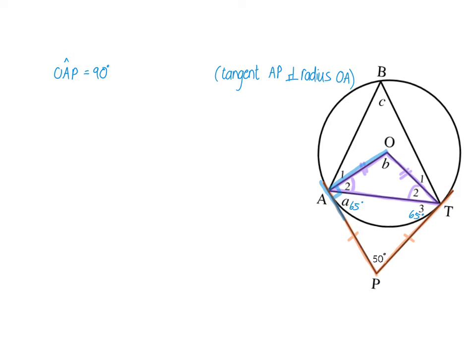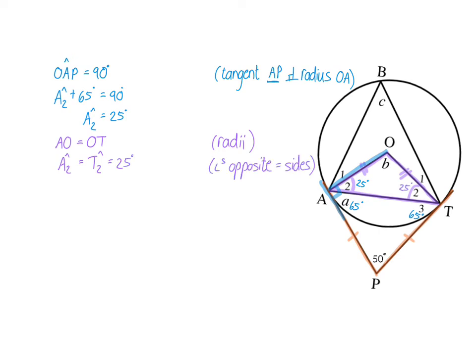Because we have more than one tangent, it helps to specify which one — in this case tangent AP, though this is also true for tangent PT. So angle A2 plus 65° (small a) equals 90°, giving angle A2 equals 25°. Since AO equals OT (both radii), angle T2 also equals 25°, as angles opposite equal sides.